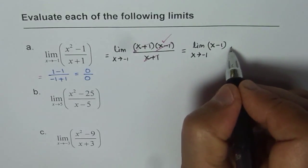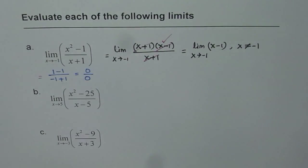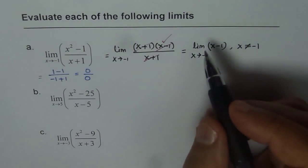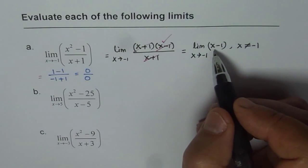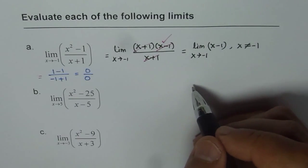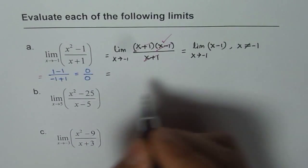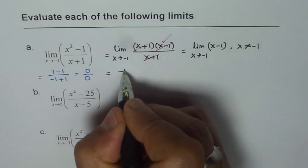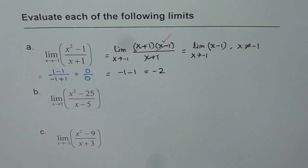Since we cancelled x plus 1, we should note that x is not equal to minus 1. Now when we are approaching minus 1, very close to that point, we can find what value we are approaching by substituting minus 1. So if I substitute minus 1 here, I get minus 1 minus 1, which is minus 2. So that is the answer.